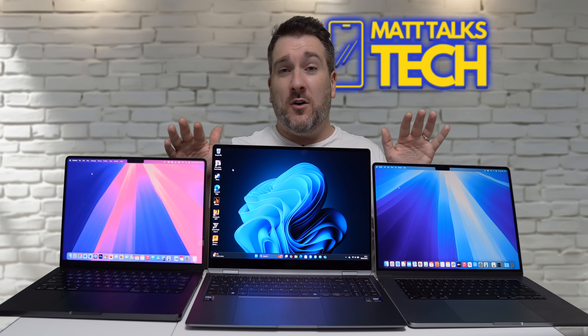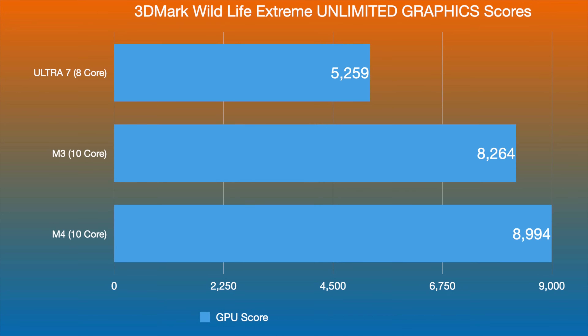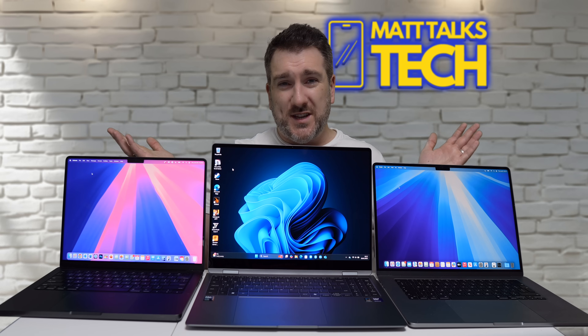Moving on to GPU, I ran the 3DMark Wildlife Extreme test. The Ultra 7 with its eight-core Arc GPU scored 5,259 — quite disappointing. The M3 with its 10-core GPU scored 8,264, a big jump ahead. The M4 with its 10-core GPU scored 8,994 — a modest improvement over the M3, but about 40% faster than the Ultra 7, which is unbelievable.